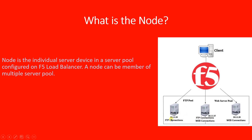Node 1 has FTP connections, and node 3 has web connections. Node 2 has both FTP connections and web connections. The nodes with FTP connections come under a pool called the FTP pool. Node 1 is in the FTP pool, node 3 is in the web server pool, and node 2 is a member of both the FTP pool and the web server pool. So a node can be a member of multiple server pools — on a single node you can run multiple services and make it a member of multiple pools.